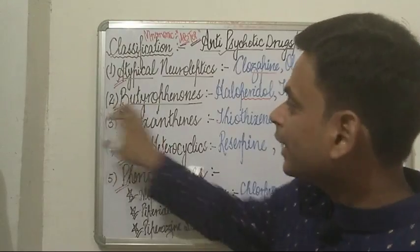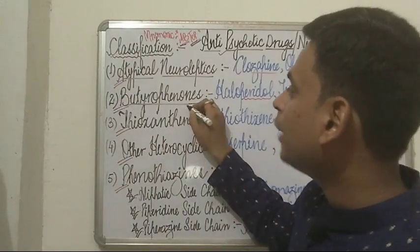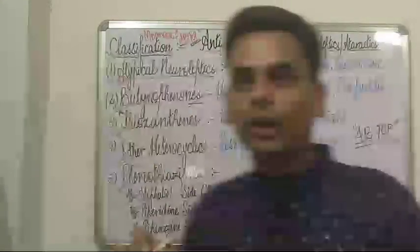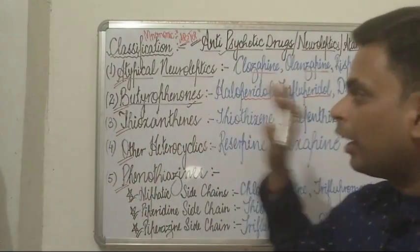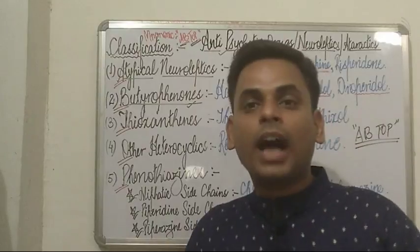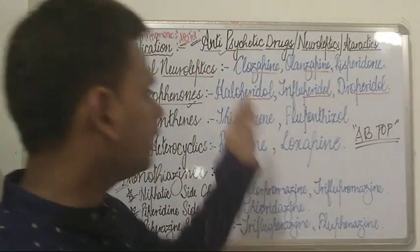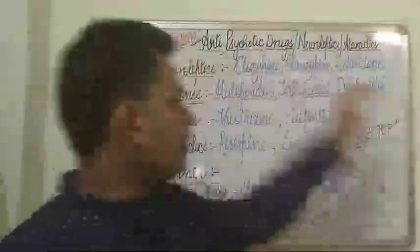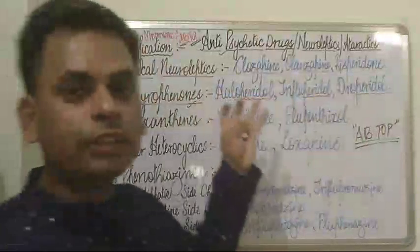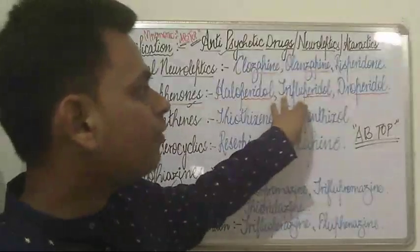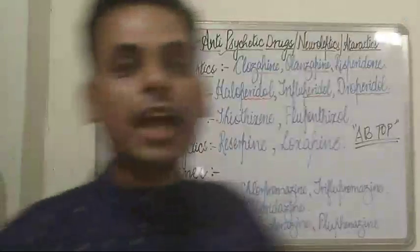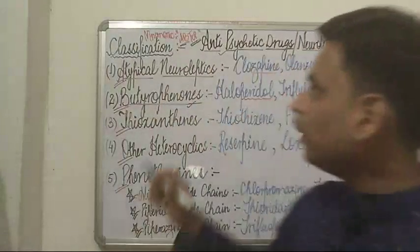The second class — the 'B' of AB TOP — is the butyrophenones. Drugs in this category typically end with the suffix '-peridol.' The important drugs of this class include haloperidol, trifluperidol, and droperidol.